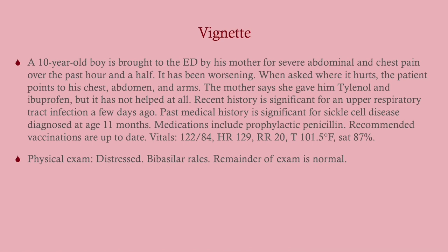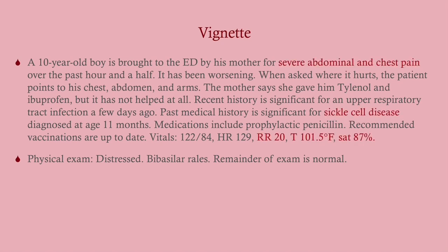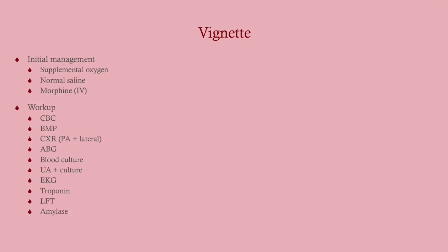Clinical vignette: a 10-year-old boy presents to the ED with severe abdominal and chest pain worsening over the past hour and a half. Tylenol and ibuprofen haven't helped. Recent history of upper respiratory tract infection. Past medical history of sickle cell disease diagnosed at 11 months. He's on prophylactic penicillin, vaccinations are up to date. He's mildly tachycardic, febrile, saturating below 90%, and has basilar rales on exam. This presentation points to acute chest syndrome.